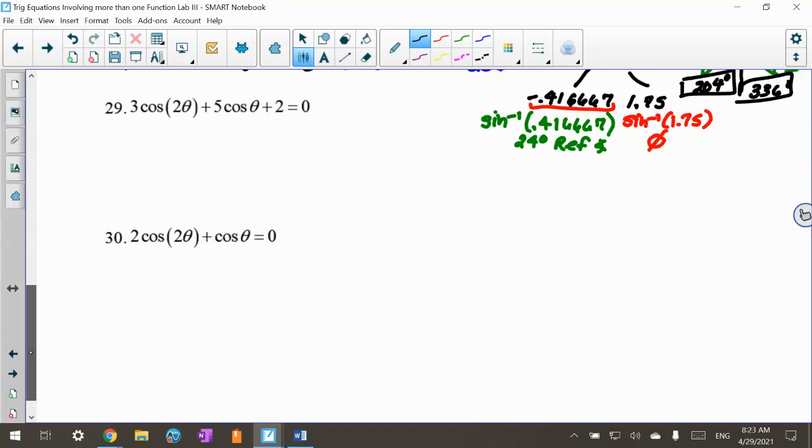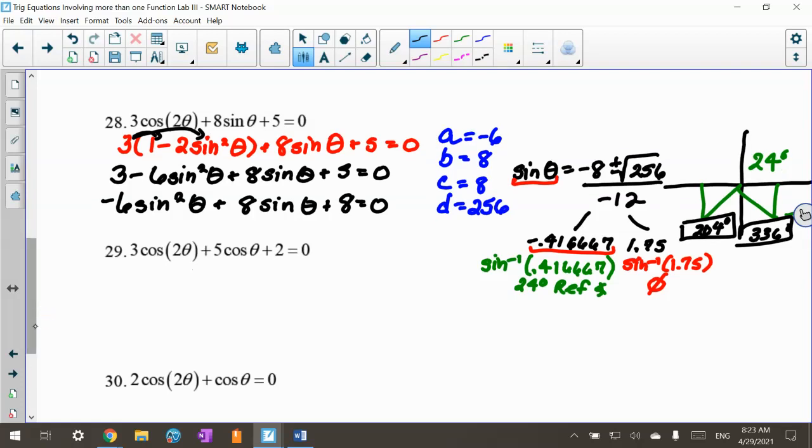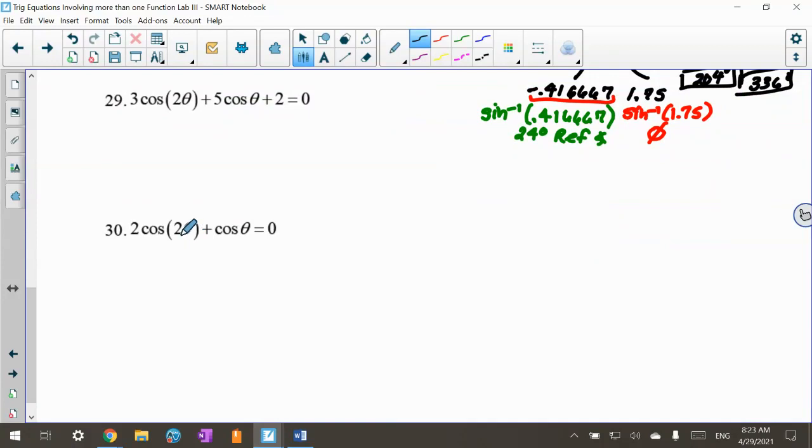I just finished the video on 28. I'm going to skip 29 because 28 we used a double angle formula for cosine of 1 minus 2 sine squared because there was sine in the equation. Down here, this one has the same double angle, cosine of 2 theta, but it's got cosine in the equation.